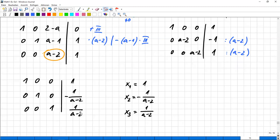So definitely. That's it. We have a unique solution, which is depending on the value of A. x1 equals one, x2 equals minus. Yes. The inverse value of A minus two and x3 equals the same, but with a positive sign. Yeah. So that's it. But.